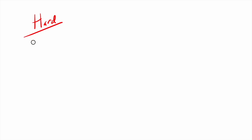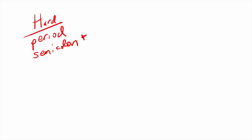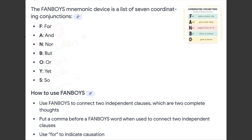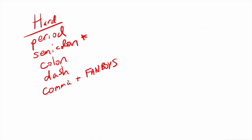Hard punctuation is going to include the period, the semicolon — and I'll say usually the semicolon, provided we're not punctuating a complex list — the colon, the single dash (so not the pair of dashes, but the single dash), and then the comma plus FANBOYS conjunction, so comma plus coordinating conjunction. All five of these are things that could join two independent clauses.